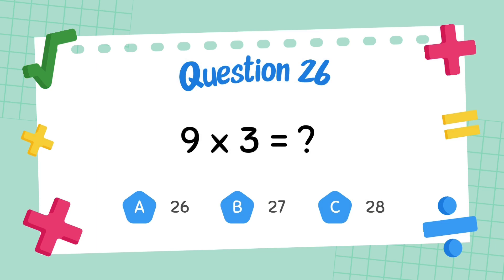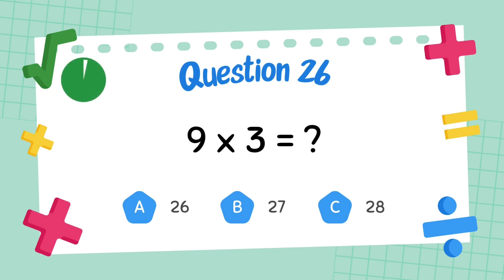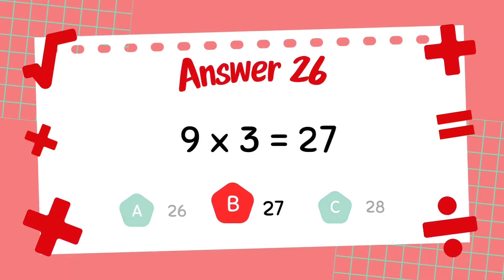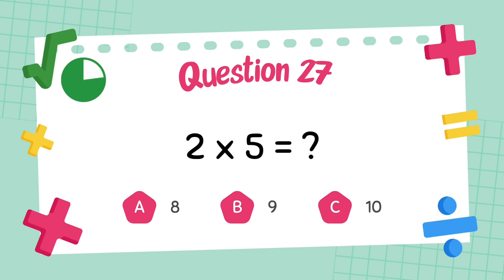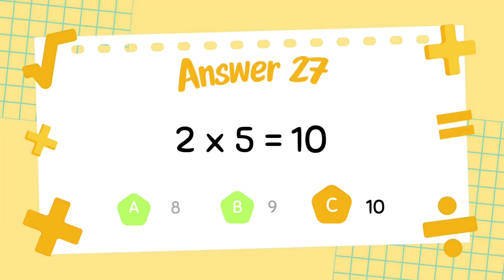What is 9 multiply 8? The answer is 27. What is 2 multiply 5? The answer is 10.